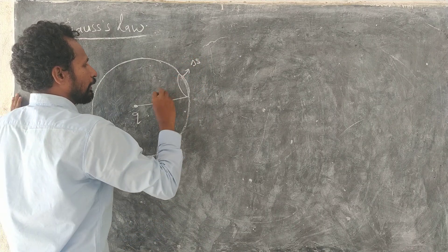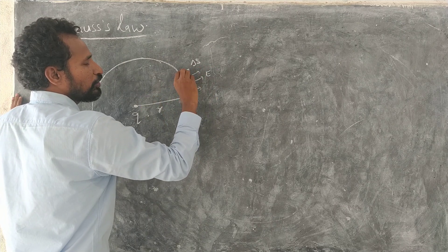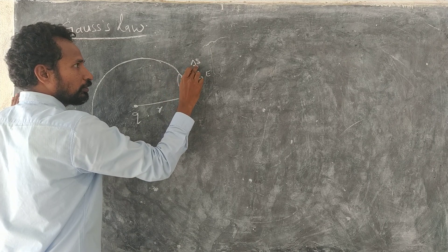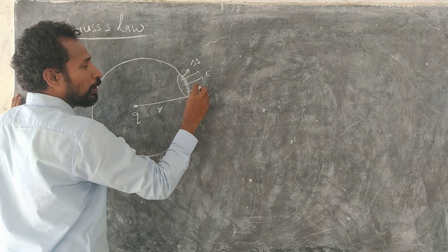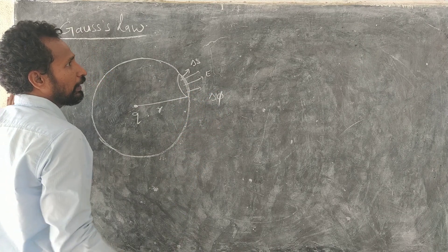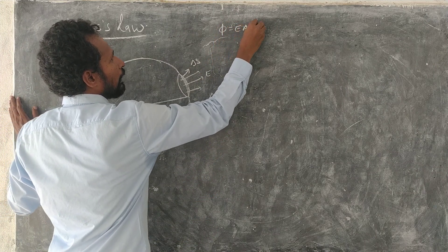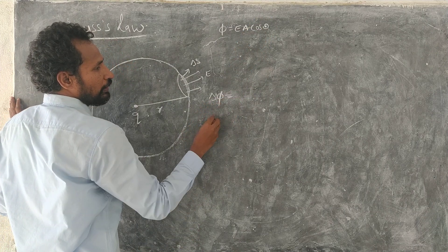First construct a small surface here. This small surface on the sphere, take it as delta s. Through the surface electric field lines act like this. So through this small area, flux I am considering, small flux that I am taking it as delta phi.